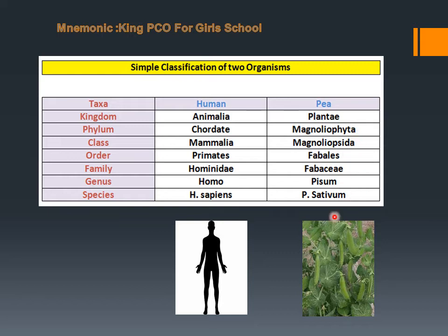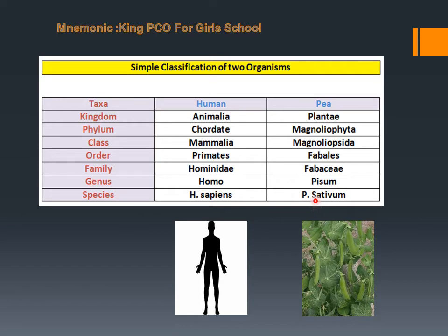These are seeds having two cotyledons — dicots. Then order Fabales and family Fabaceae. Plants in order Fabales are flowering plants. Family Fabaceae means plants which have legumes — you can see different legumes with different branches. Then genus is Pisum and species is Pisum sativum.